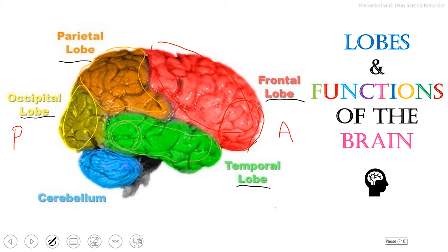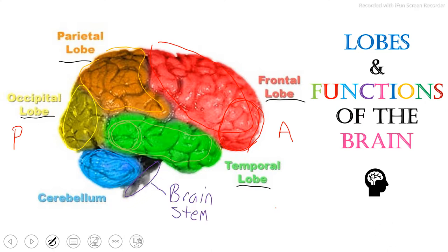Last but not least, we have the brain stem here. The brain stem is used for our basic functions like our heart rate, our respiratory rate, and our sleeping and eating.